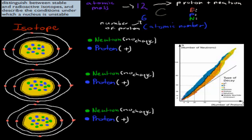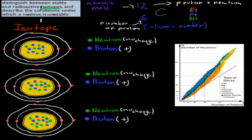I'll cover the first part, but we also need to know what an isotope is, so I'll explain that as well. Before we start, I want to make sure we go over something from year 11, which was the atomic mass.